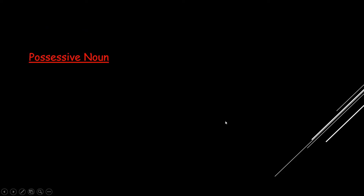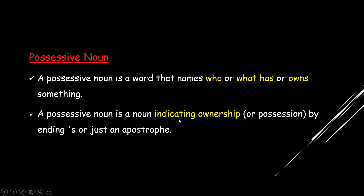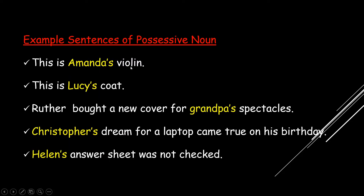Next is possessive nouns. A possessive noun is a word that names who or what has or owns something — it is a noun indicating ownership. We make a noun possessive by adding an apostrophe and an 's' at the end of the word. For example, 'This is Amanda's violin.' Amanda is the name of a person, and when we add the apostrophe and the 's', it becomes a possessive noun. Without the apostrophe and the 's', it would be a proper noun.